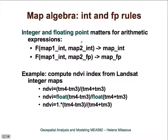It is important to get familiar with integer and floating point rules. The implementation depends on the software, but usually if the function is applied to maps that are all integers, the resulting map will be integer. If at least one map is floating point, the result will be floating point. This is important because if we forget about this, we can get completely wrong results.